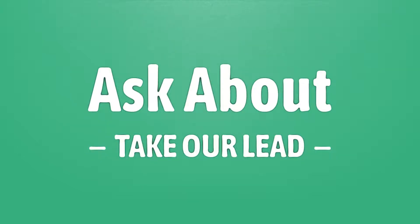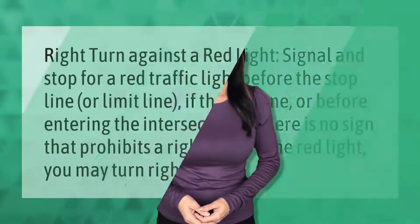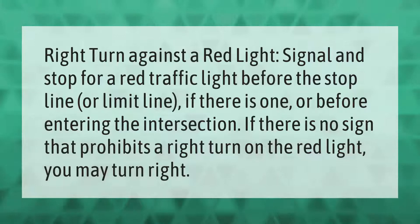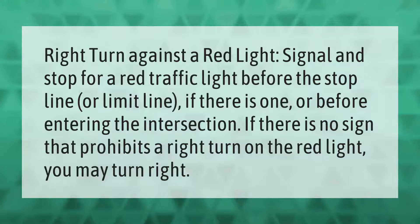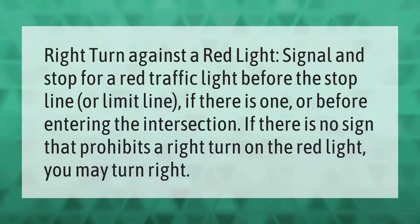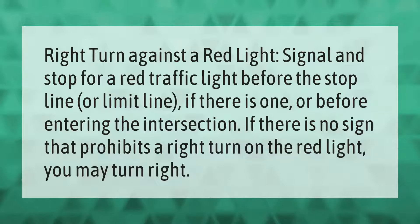Right turn against a red light: signal and stop for a red traffic light before the stop line or limit line if there is one, or before entering the intersection. If there is no sign that prohibits a right turn on the red light, you may turn right.